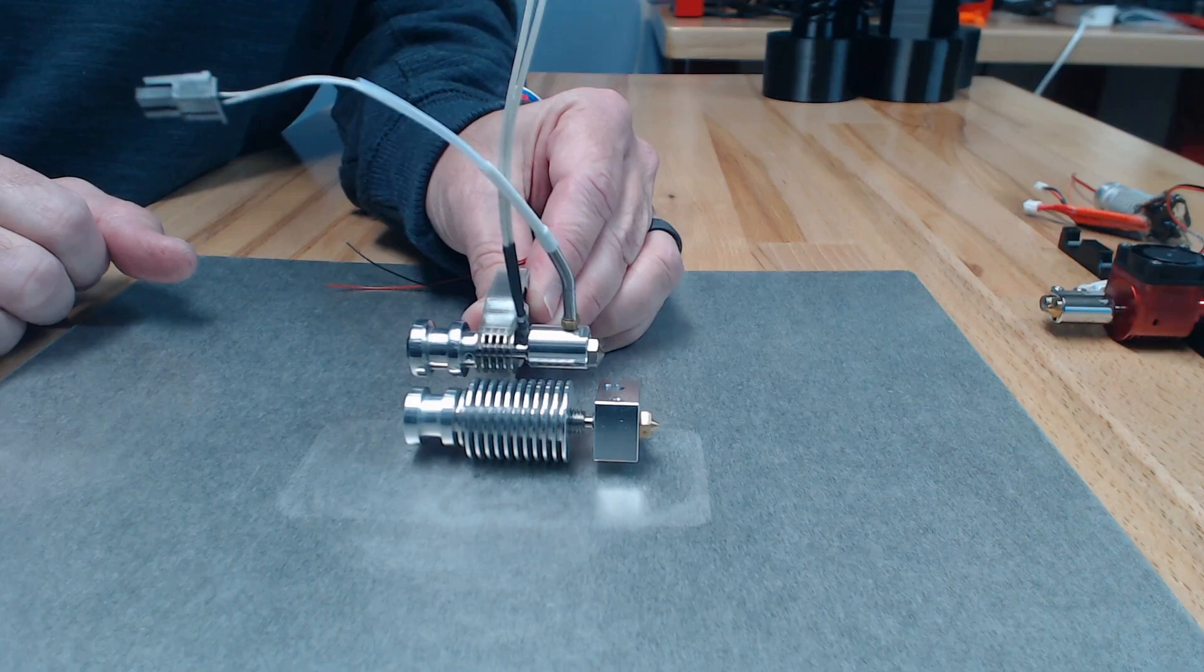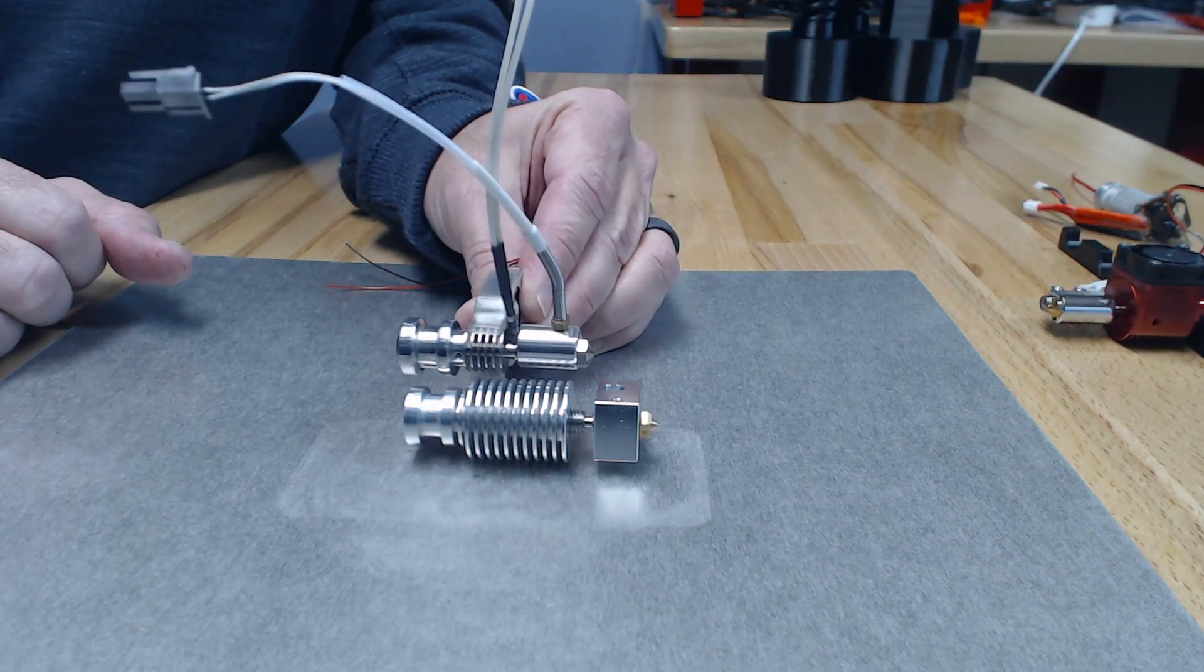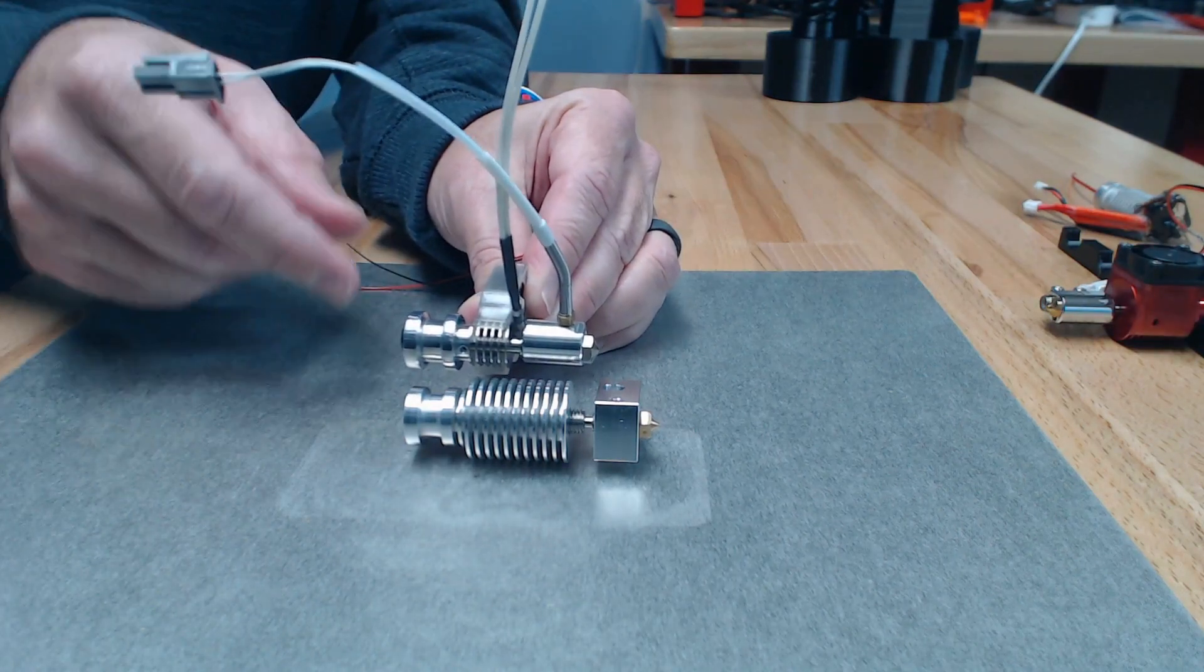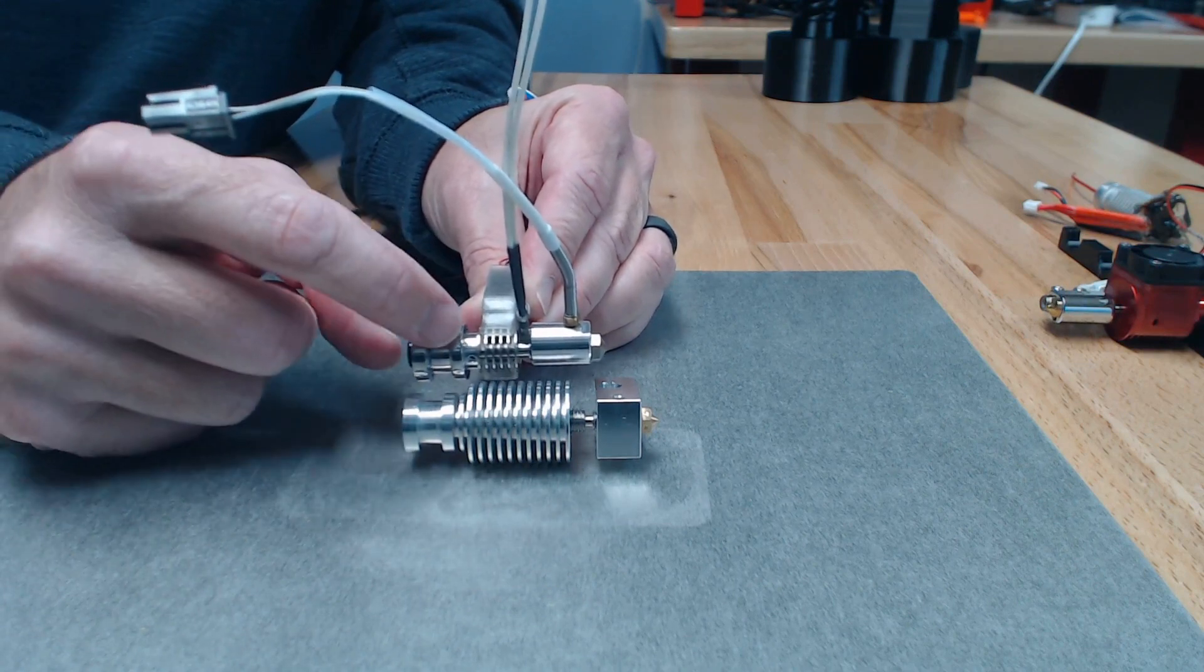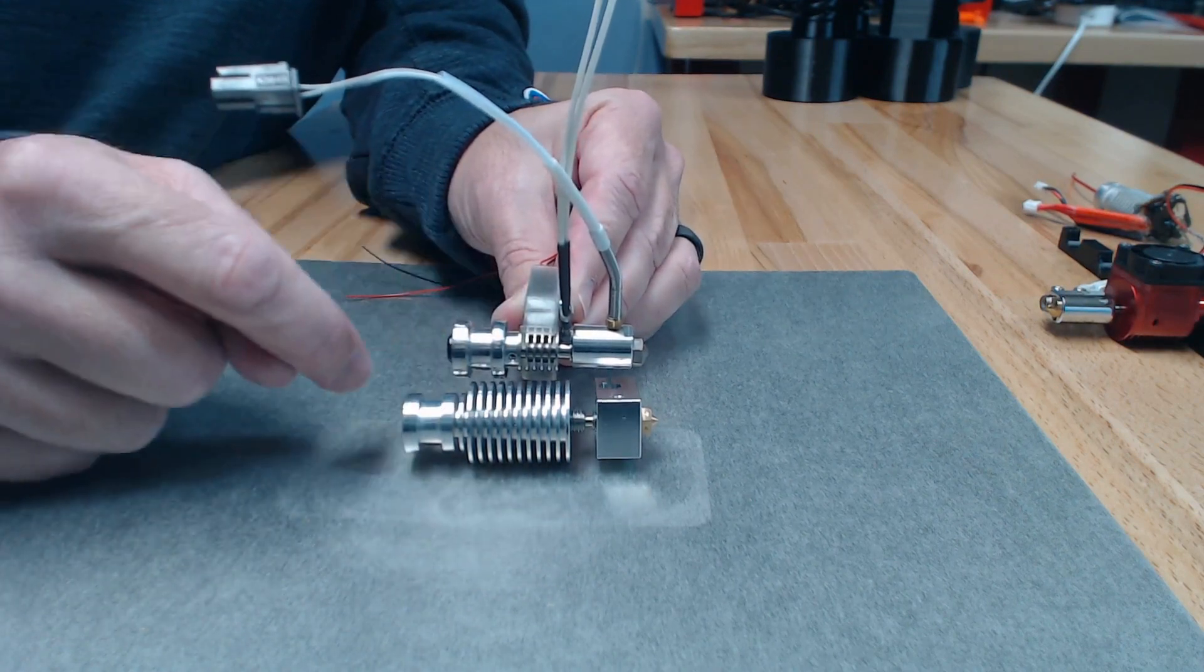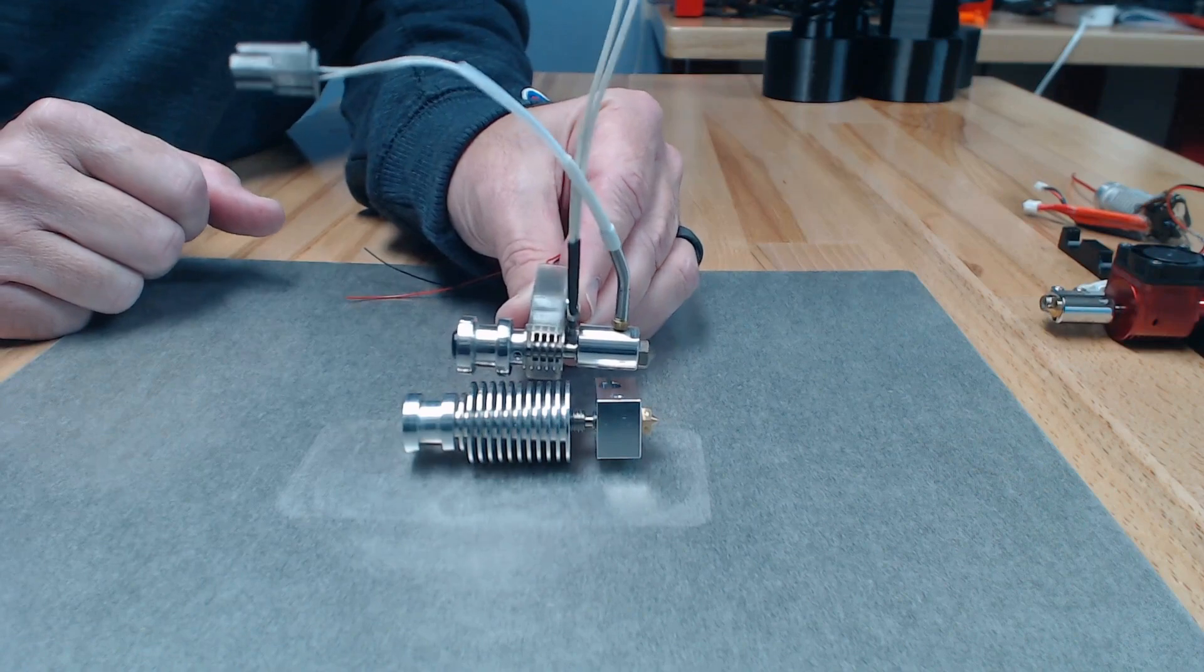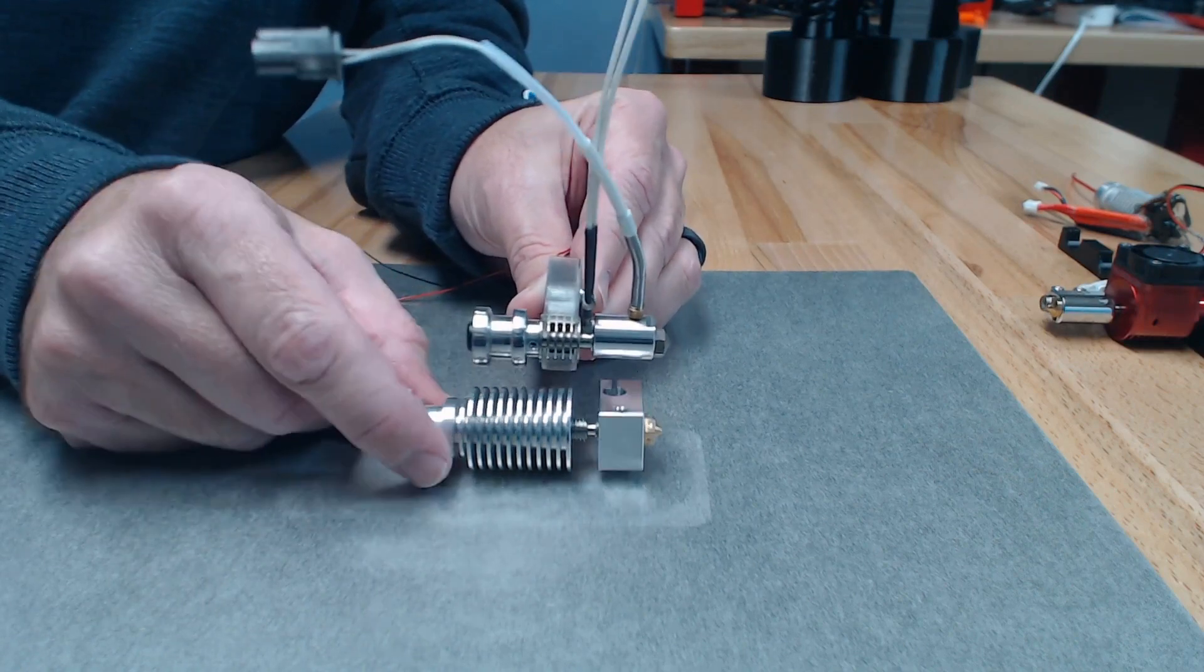So you can see the length difference there between the V6. And again, they do have a collet adapter that would make it the same length as a V6, making it easier to adapt to printers.